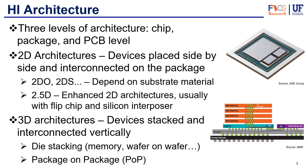Then there's an enhanced version, which are the 2.5D chips — we've talked about 2.5D chips before. They usually use flip chips and a silicon interposer, as you can see up here in the top right. And then we move on to 3D architectures, where devices are stacked vertically and also interconnected vertically. You can have the dies stacked on top of each other, which is very common for HBMs or high bandwidth memory stacks, as you can see over here on the right.